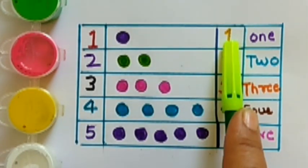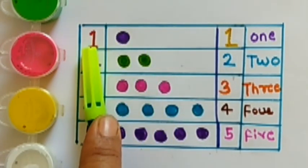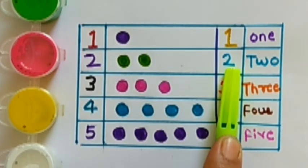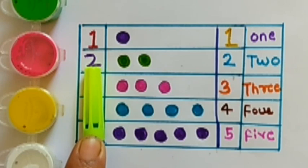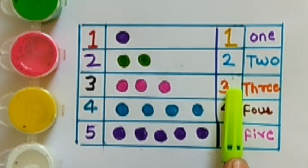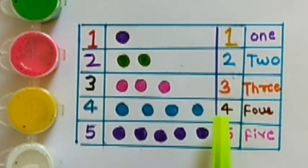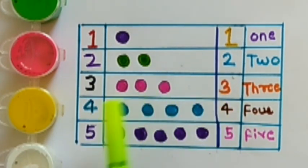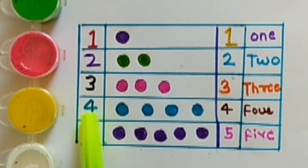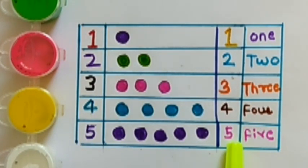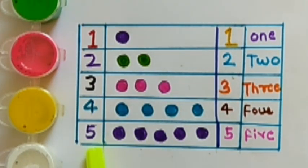1 plus 1 is equal to 2, 2 plus 2 is equal to 4, 3 plus 3 is equal to 6, 4 plus 4 is equal to 8, 5 plus 5 is equal to 10.